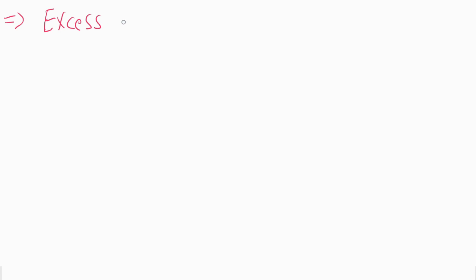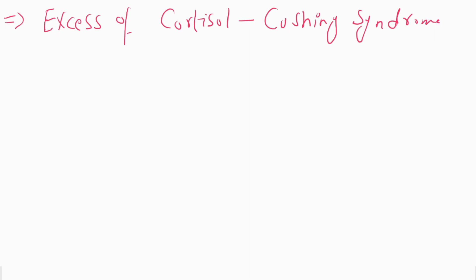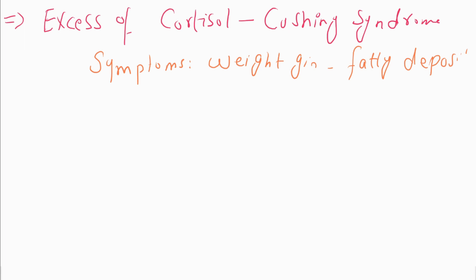The next disorder includes excess of cortisol, a hormone of the adrenal gland, and this disease is also known as Cushing syndrome. Cushing syndrome is caused by excess cortisol, and the symptoms include weight gain and sometimes fatty deposits in certain areas of the body.